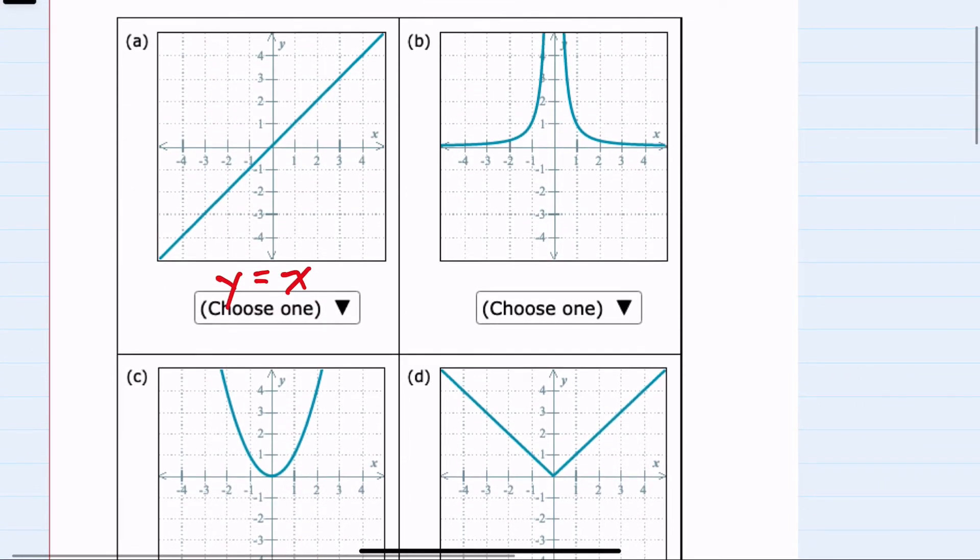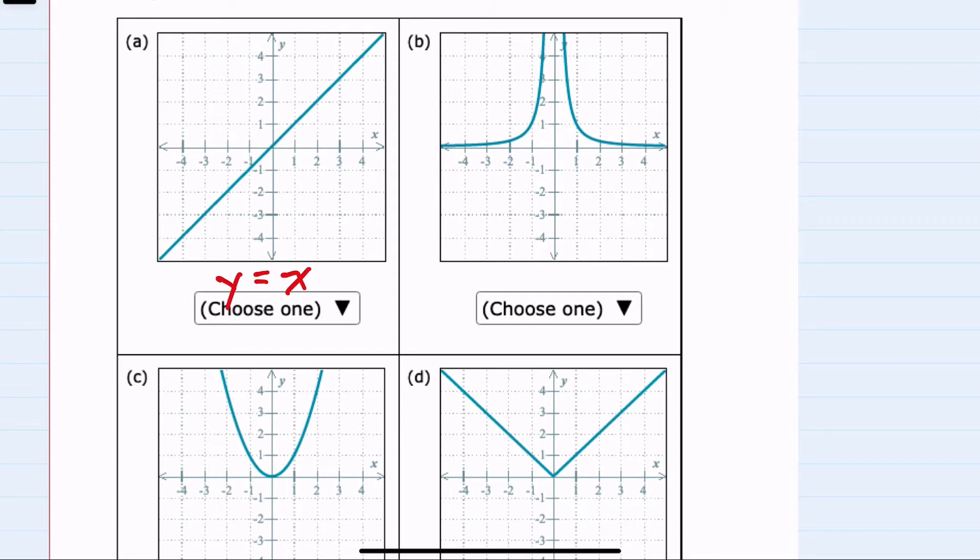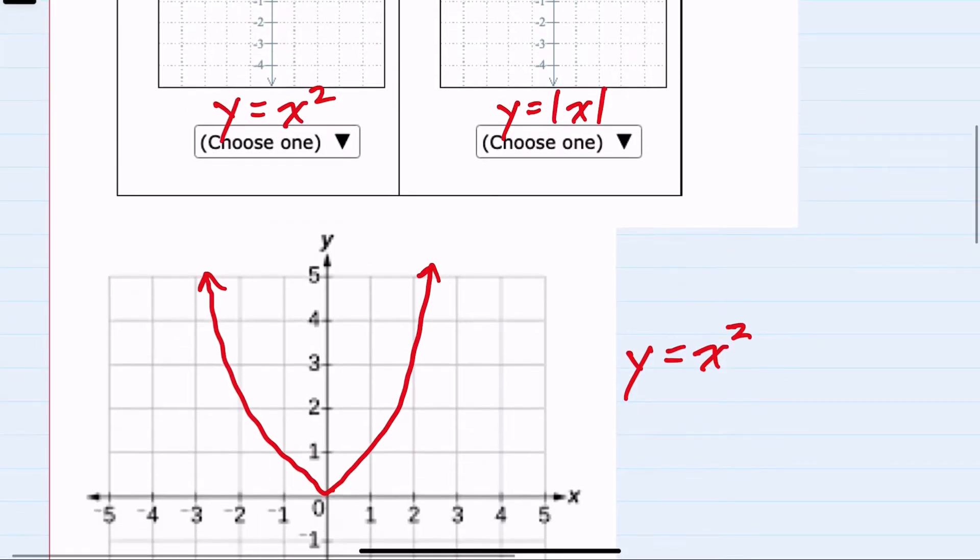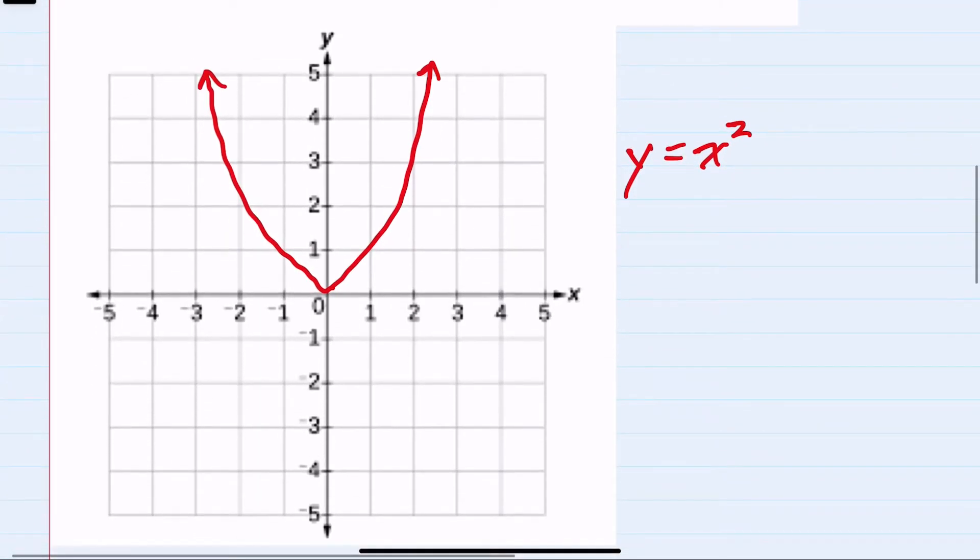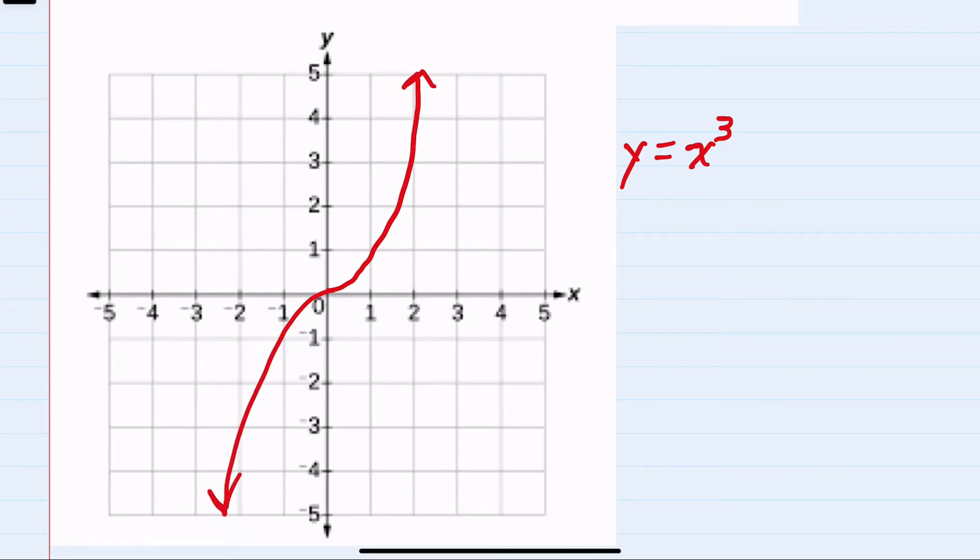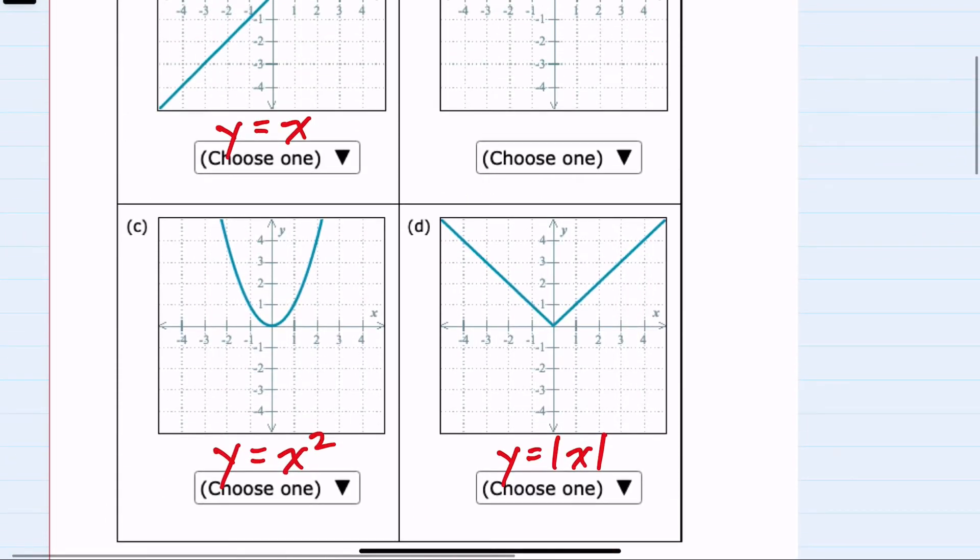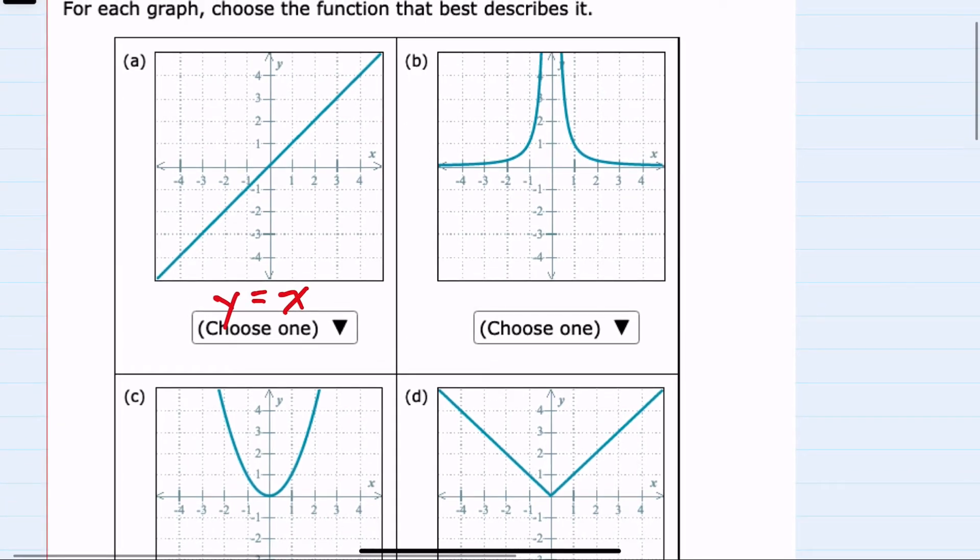And at this point, we haven't seen b represented yet. If we continue looking at parent functions, the next would be y equals x cubed. So this has sort of an s shape, like so. So looking back, that's not the shape of b.